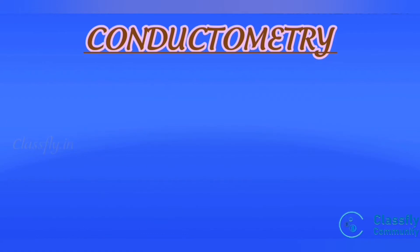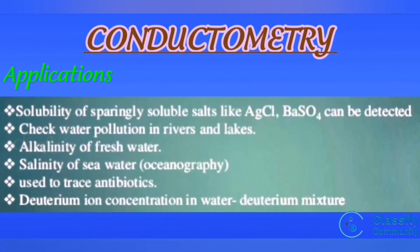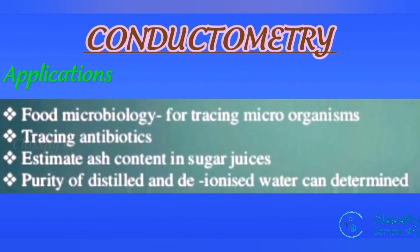Applications: First one, solubility of sparingly soluble salt like silver chloride, barium sulfate can be detected. Second one, check water pollution in rivers and lakes. Third one, alkalinity of freshwater. Fourth one, salinity of seawater. Fifth one, used to trace antibiotics. Sixth one, deuterium ion concentration in water deuterium mixture. Seventh one, food microbiology for tracing microorganisms. Eighth one, tracing antibiotics. Ninth one, estimate ash content in sugar juices. Tenth one, purity of distilled and deionized water can be determined.